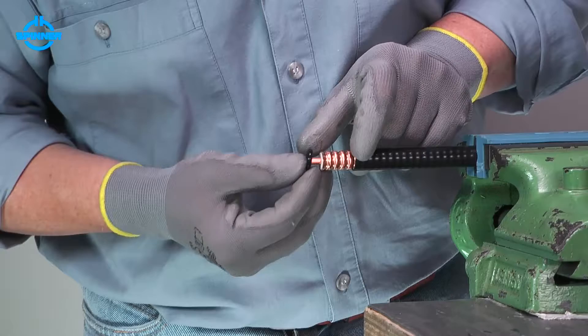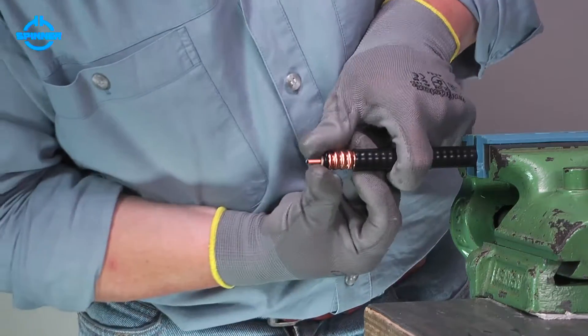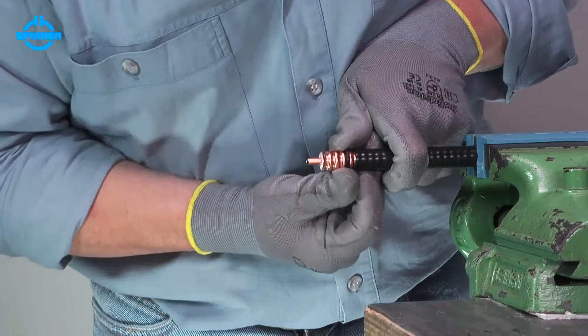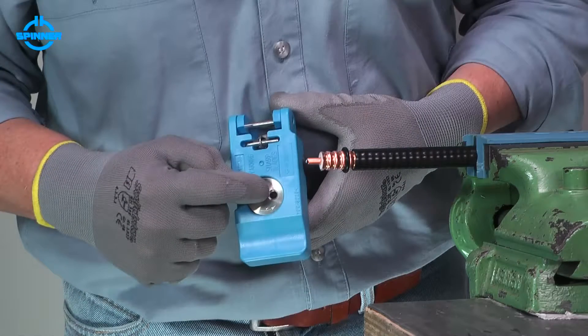Slide the O-ring onto the outer conductor. Make sure the O-ring is placed in the last cleared corrugation valley next to the trimmed jacket.